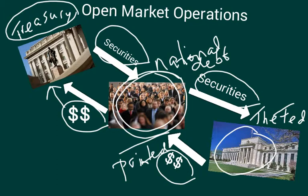The Fed could also sell securities — then the arrows would go the opposite way, and that would decrease the money supply. So this is called open market operations: buying securities by the Fed puts newly printed money into the economy. As soon as money gets into the hands of the public, it becomes part of the money supply and the money supply increases.